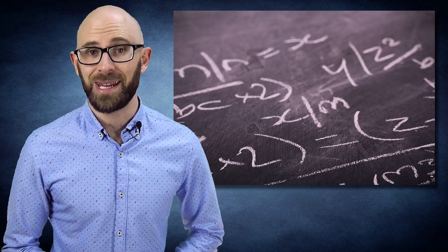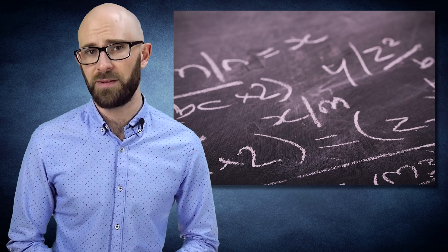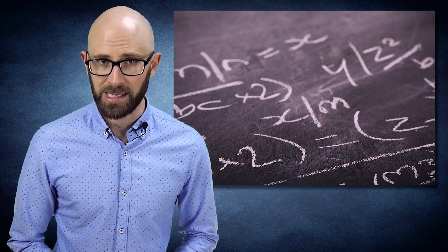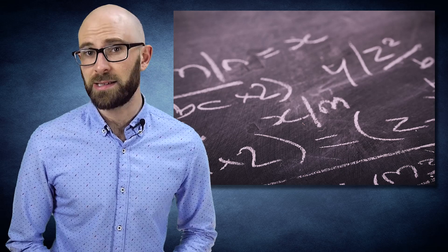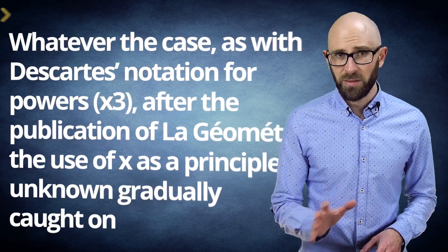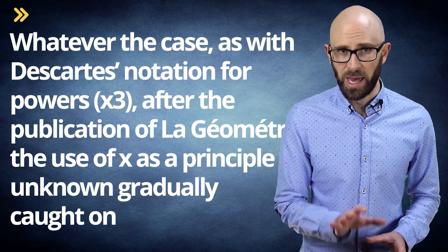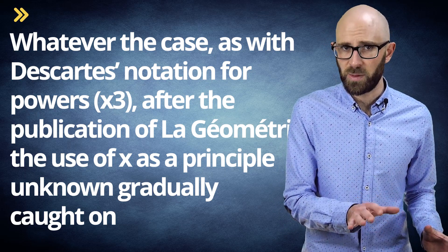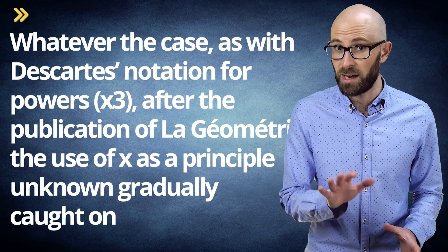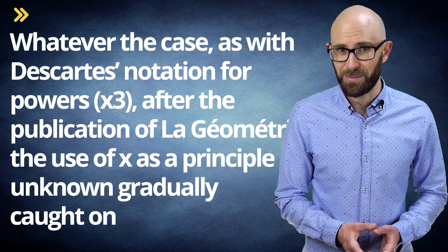So in the end, as far as hard documented evidence shows, it appears Descartes arbitrarily chose these letters to represent different things in his works as was convenient, and it just so happened that in his landmark work La Géométrie he decided the specific variable nomenclature, perhaps on a whim. Whatever the case, after the publication of La Géométrie, the use of x as a principal unknown, as well as the more general tradition of a, b, and c being knowns and x, y, and z being unknowns, gradually caught on — and the rest, as they say, is mathematical history.